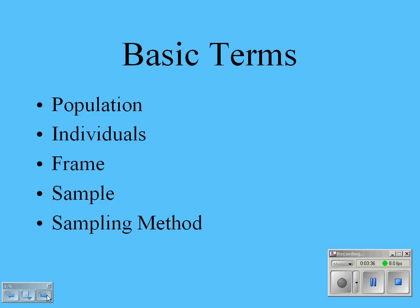A sampling method is the method I employ to choose my sample—how I get the individuals I'm actually going to interview or study. And finally, the term bias refers to a systematic favoring of a certain outcome.